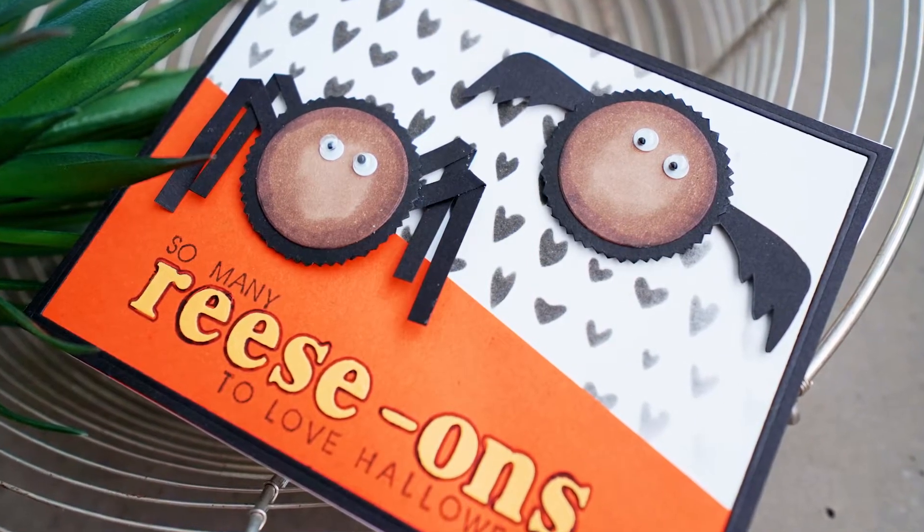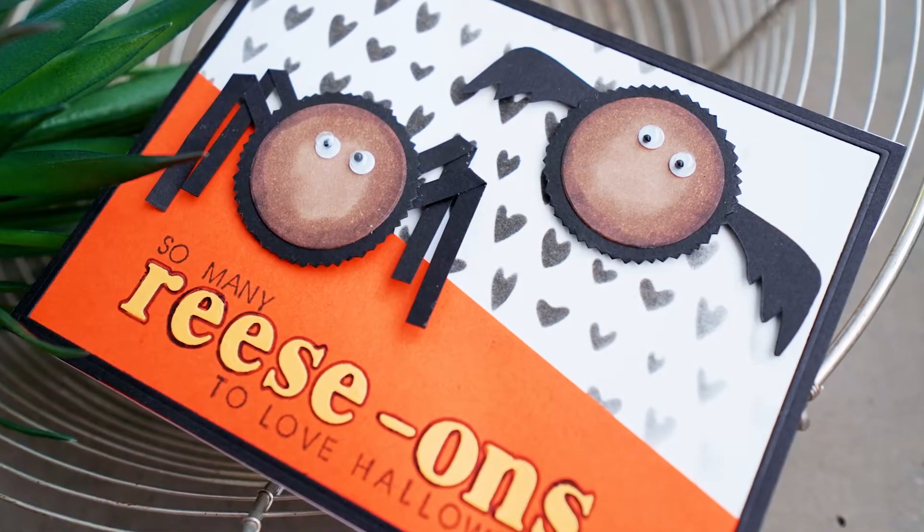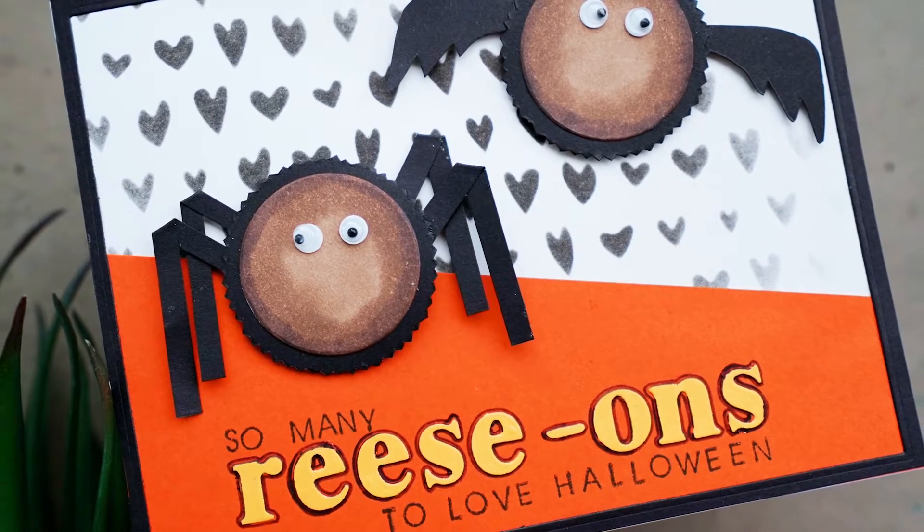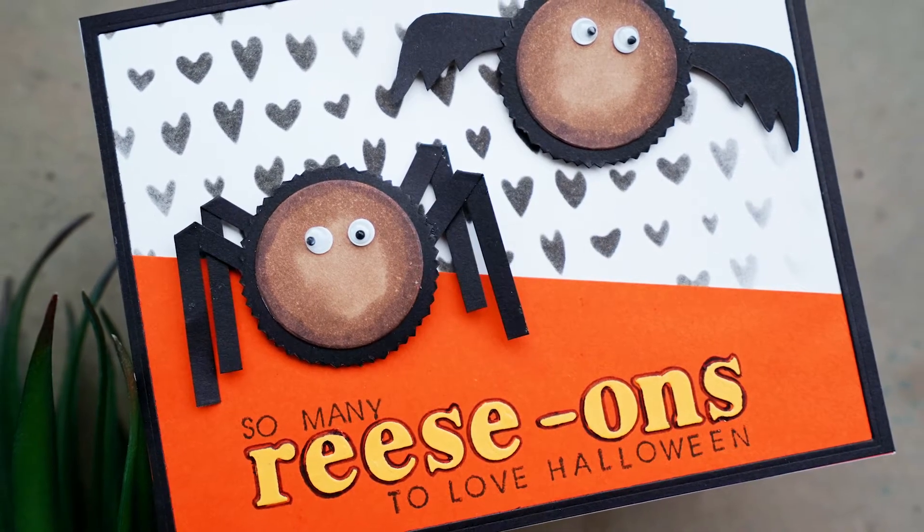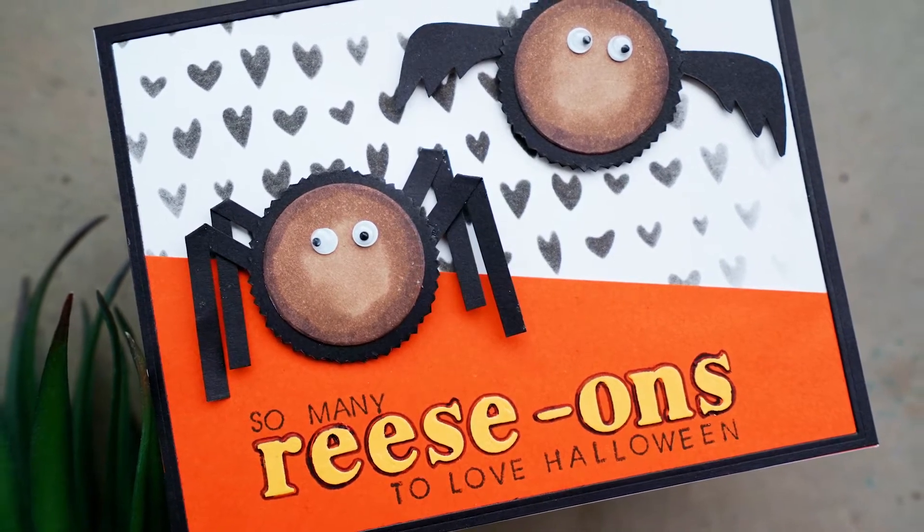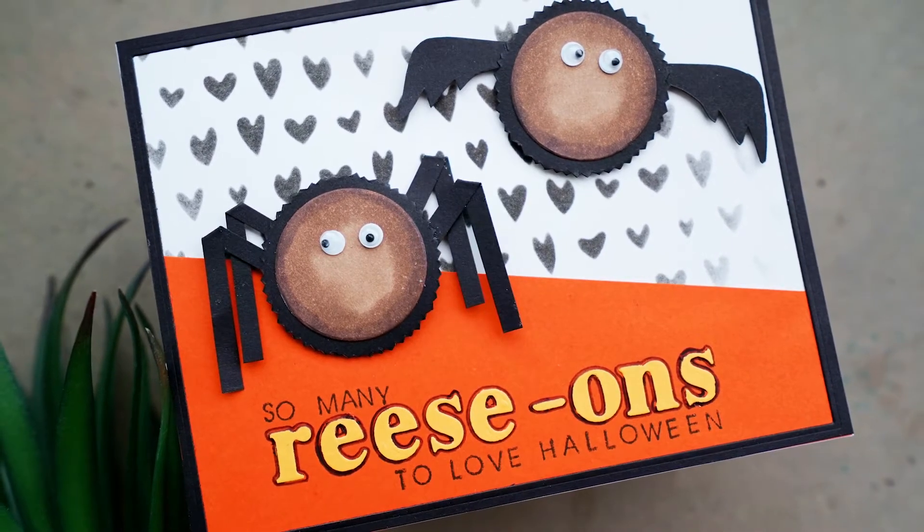In this episode, it's all about using shapes. I'm going to show you how to make this delicious-looking Reese's card. And I've got a bonus tip about how to glue loose die-cut letters nice and straight without pulling your hair out. Let's do it!